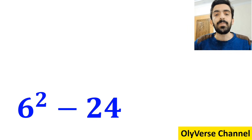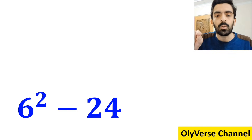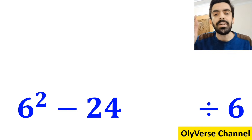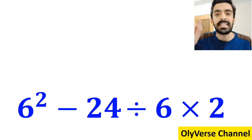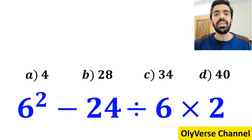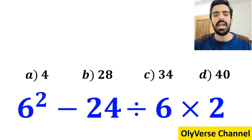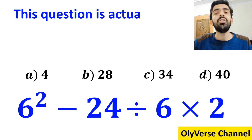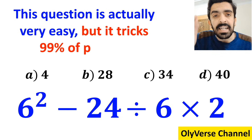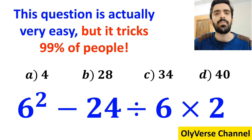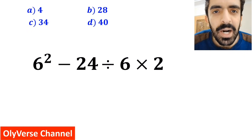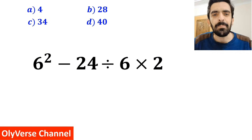What is the value of the expression 6 squared minus 24 divided by 6 times 2? Which option do you think is the correct answer to this question? This expression is actually very easy, but it tricks 99% of people. Let's dive in and break it down step by step together.